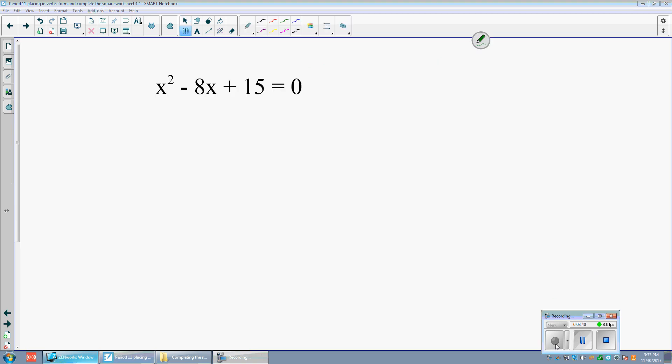Okay, write down this problem. This is what I'm going to do. A equals 1. B equals negative 8. C equals 15. Half of B equals negative 4. Half of B squared equals 16.